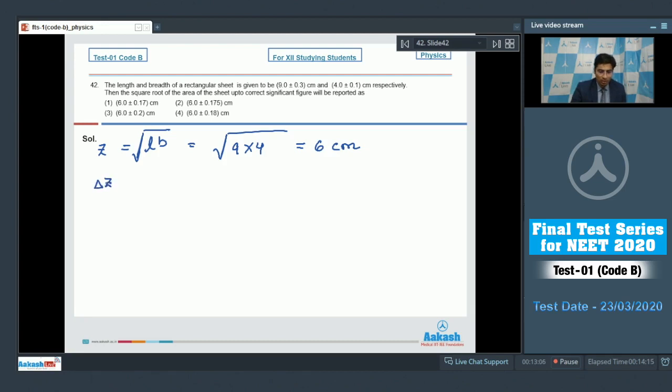Now dear students, from the rules of fractional error, delta Z by Z will be half into delta L by L plus delta B by B. Which means that delta Z will be equal to Z by 2 times delta L by L plus delta B by B.